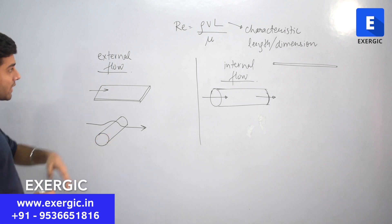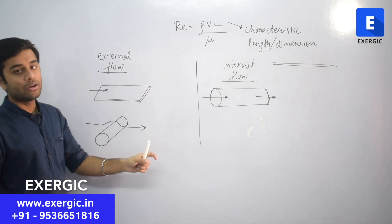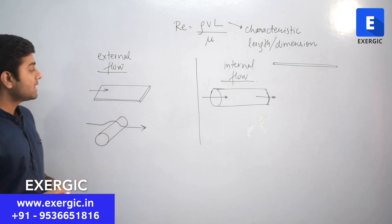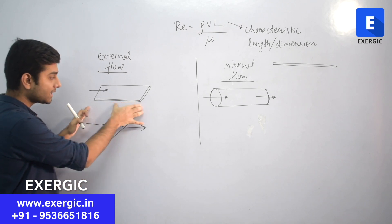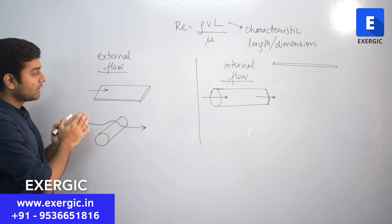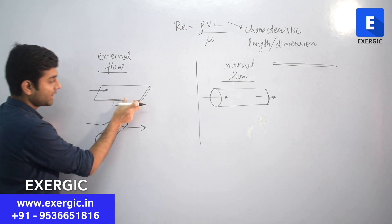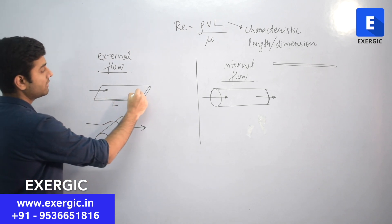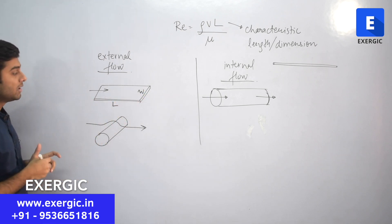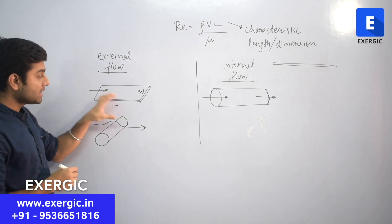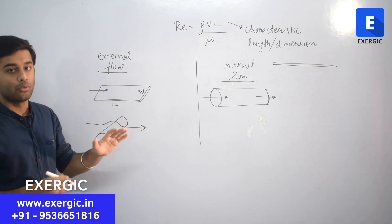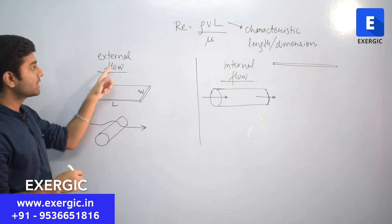For external flows, the characteristic dimension or the characteristic length is equal to dimension of the surface or dimension of that solid system which is along the flow. For example, in this case, this is the length of the plate. I am not talking about the width, I am talking about the length. So, the length of this system is the dimension, is the main dimension along the direction of flow. So, that will be equal to its characteristic length. So, for this case, L is equal to L' (characteristic length is equal to L').